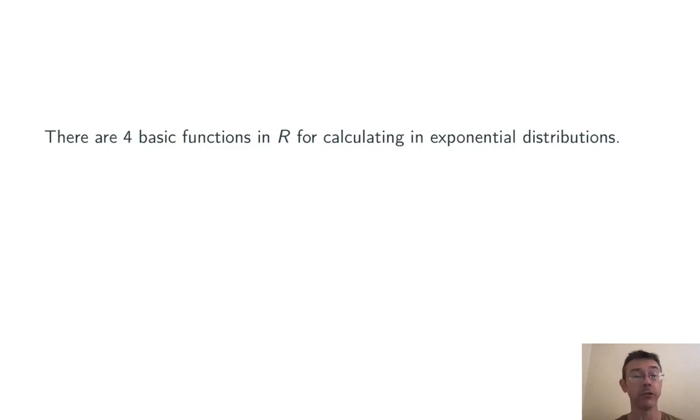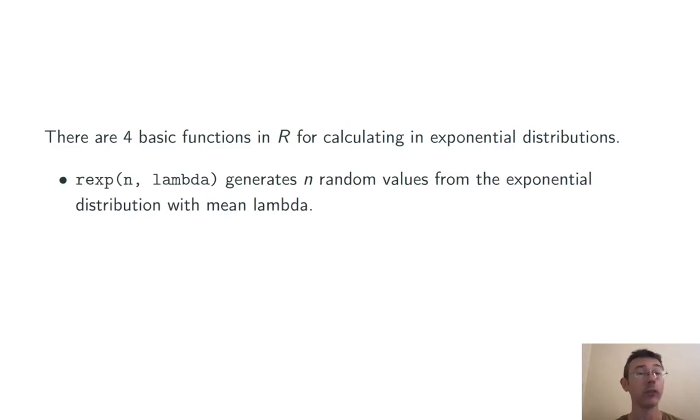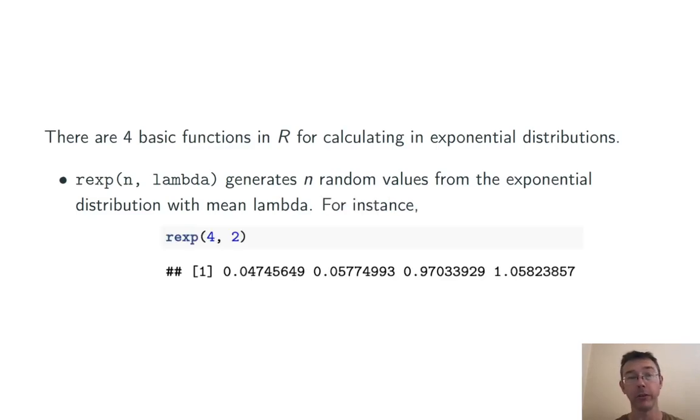There are four basic functions in R for the exponential distribution. First is rexp, which generates n random values from the specified exponential distribution. For instance, rexp(4, 2) generates four random values from the exponential distribution with mean number of occurrences per unit time equal to 2.